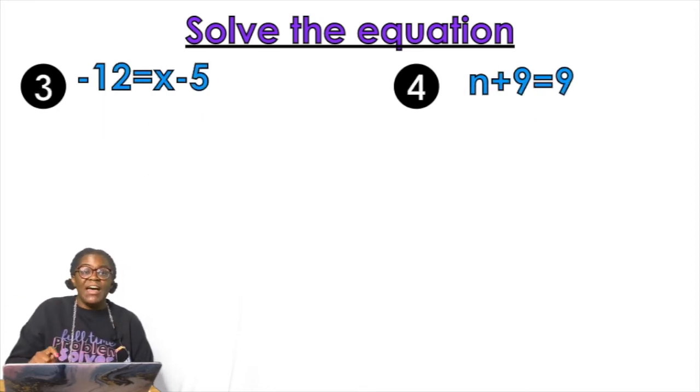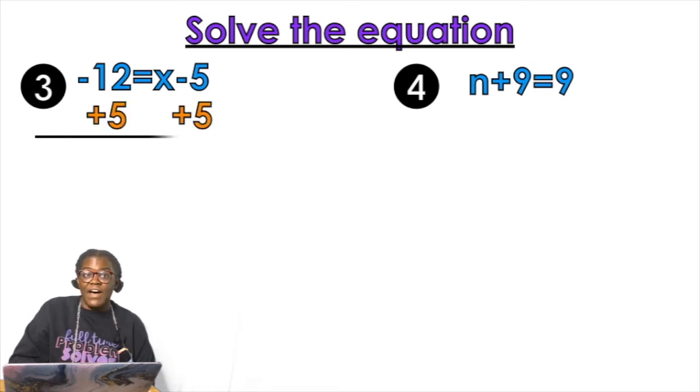So example number three I have negative 12 equals x minus five. Again we want to get x by itself. So looking on that side of the equal sign, it's a negative five. How do I get rid of a negative five? Adding five to both sides.